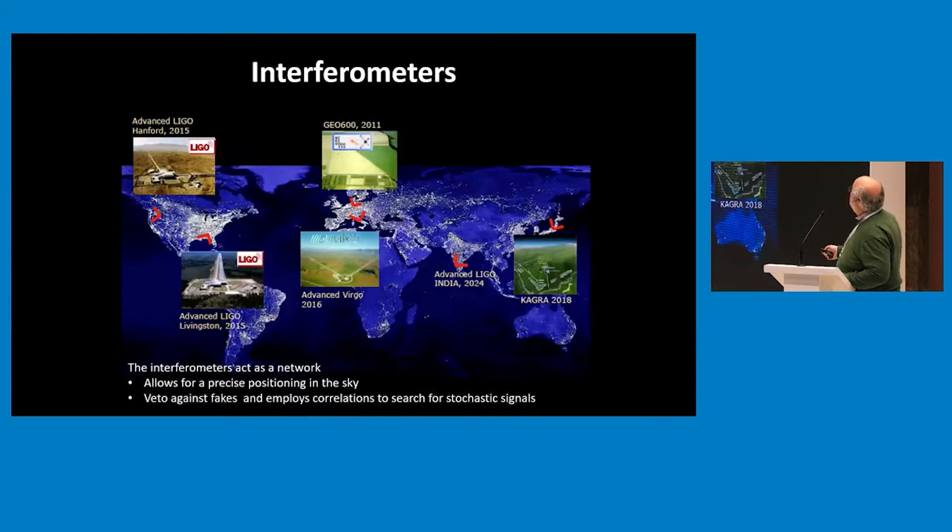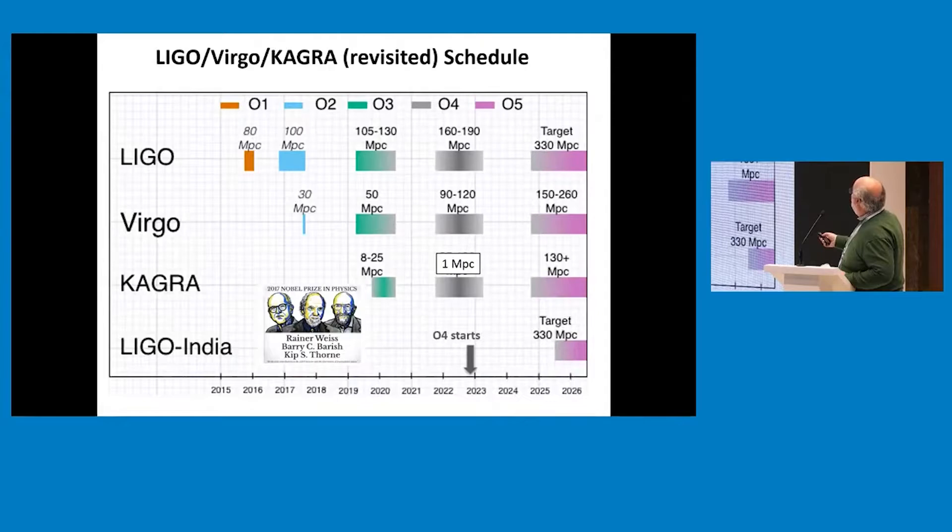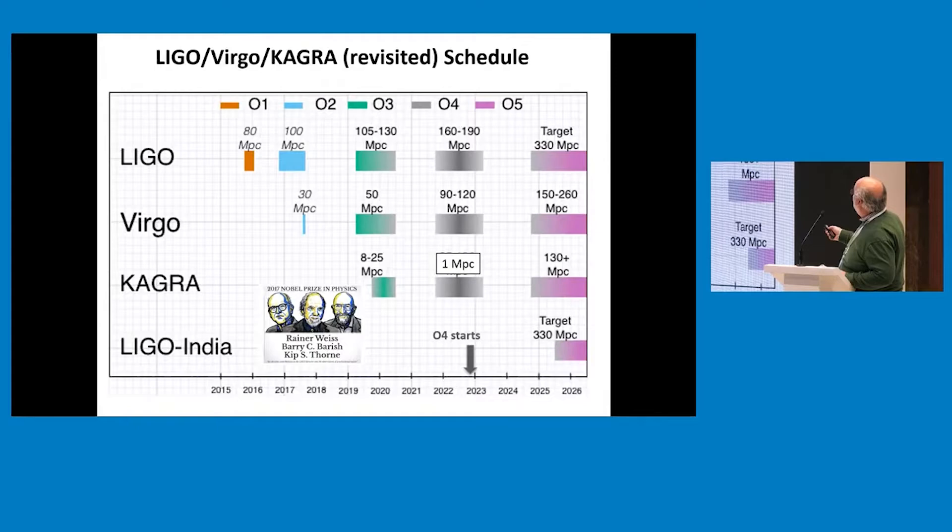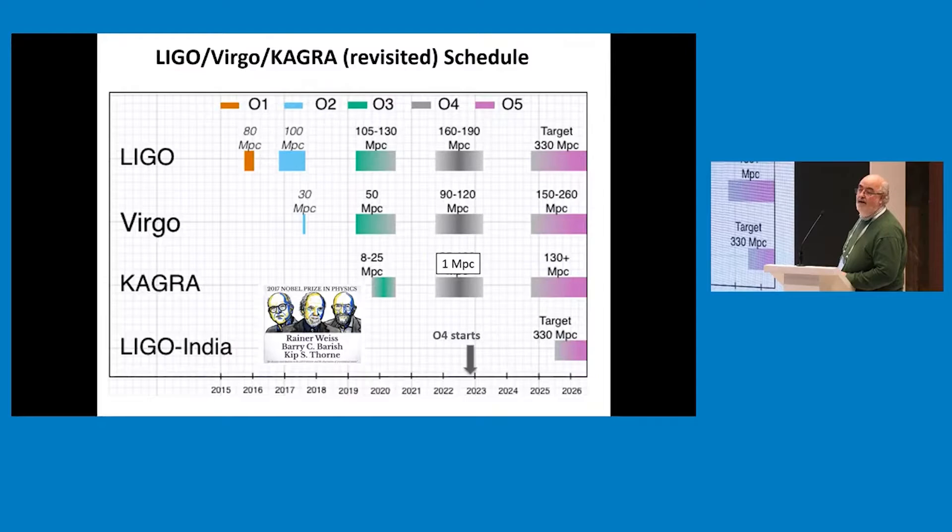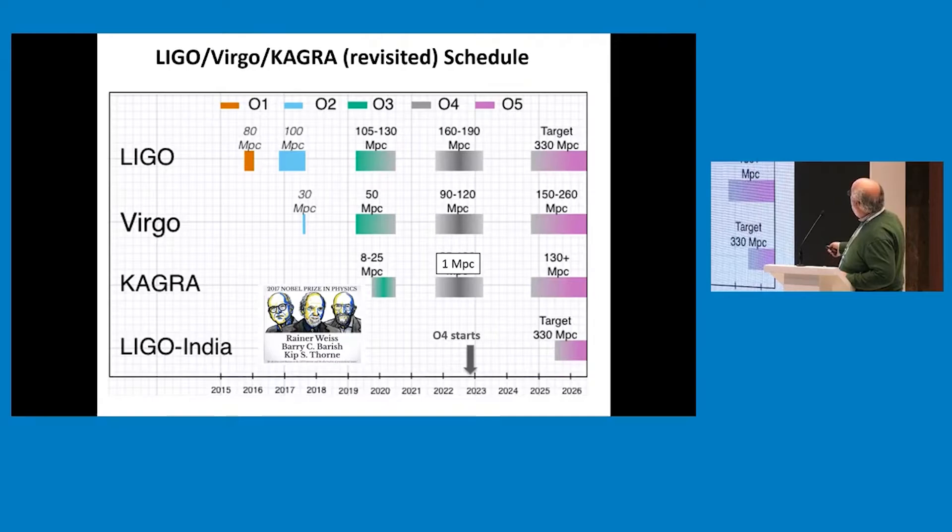Now there are a network of interferometers in the world. There are LIGO in two sites, there's Virgo in Italy, there is GEO, which was basically the infant of all this, in Germany, there's one in Kagura in Japan, and there's one under construction in India. All of them have a well-defined program for observation. In 2015-16, there was the observation of gravitational waves led to the Nobel Prize 2017. And since then, we have been doing science. Now the next observation round comes at the end of next year.